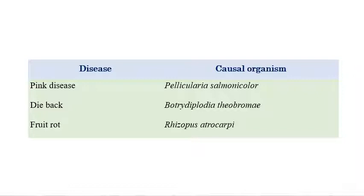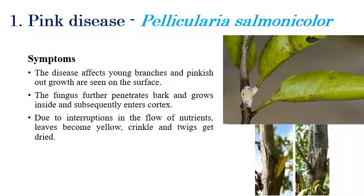The first one is pink disease, which is caused by Pellicularia salmonicolor. As the name indicates, pinkish discoloration can be seen on leaves as well as on young branches.